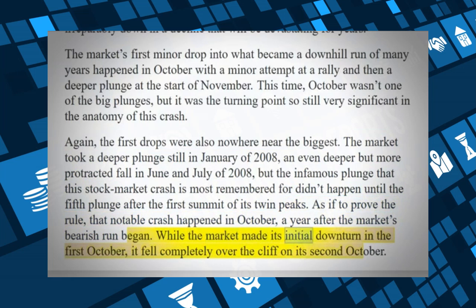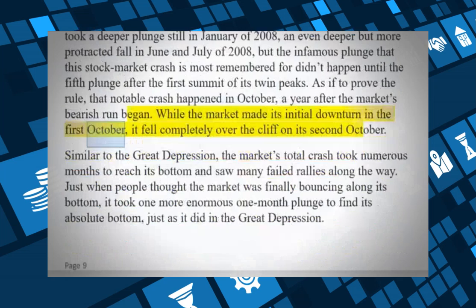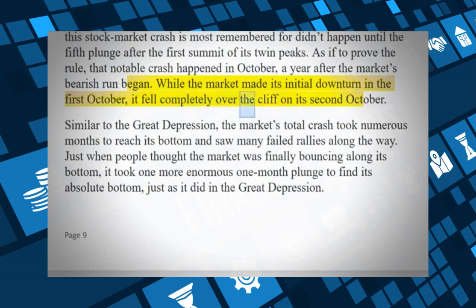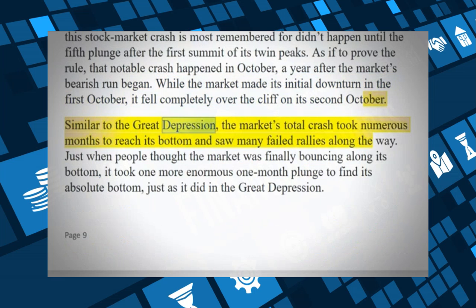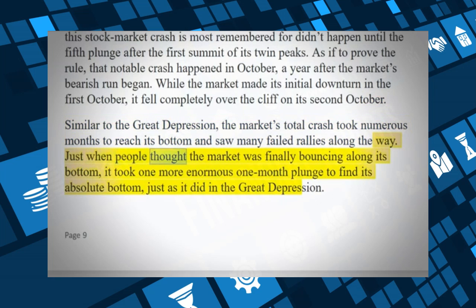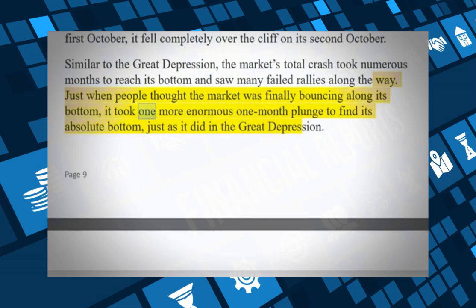As if to prove the rule, that notable crash happened in October — a year after the market's bearish run began. While the market made its initial downturn in the first October, it fell completely over the cliff on its second October. Similar to the Great Depression, the market's total crash took numerous months to reach its bottom and saw many failed rallies along the way, then took one more enormous one-month plunge to find its absolute bottom.